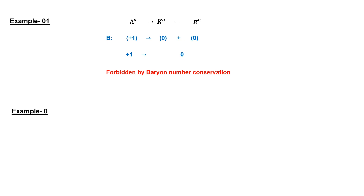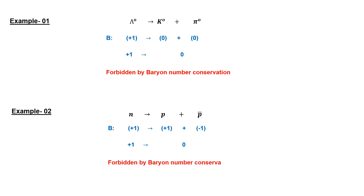Consider a case where a neutron is decaying into a proton and an antiproton. In this decay reaction, the proton and neutron are baryon particles having baryon number +1, while the antiproton is an antibaryon particle having baryon number −1. Since the baryon number is not conserved in this reaction, this reaction is not allowed according to baryon number conservation.